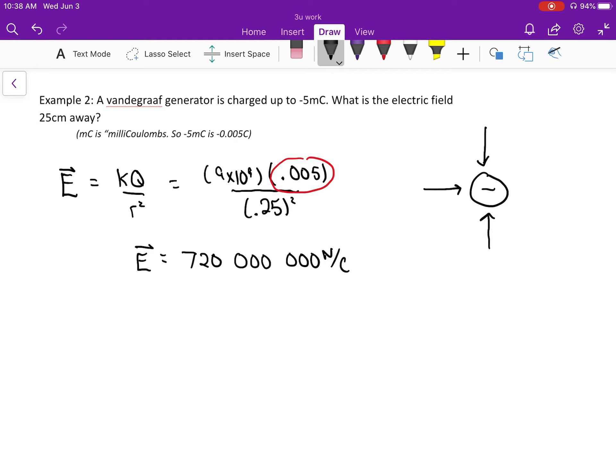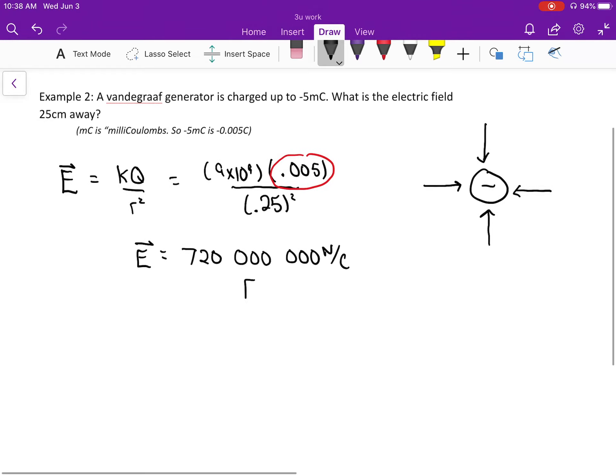So I'm not going to put a negative into this equation. I'm just going to use the equation to crunch out the number, then doodle a little picture, and then use my brain to figure out that the direction is, in this case, since it's negative, towards the charge. So kind of a learning piece moving forward for electric field. Since it's a vector equation, you don't have to put the negative into the equation.